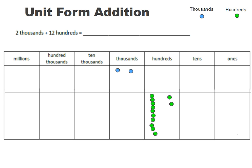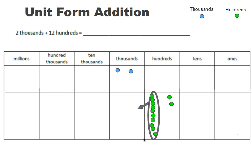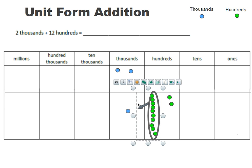When I have ten in this column, what I can do is I can throw a lasso around those and group them together. I can bundle them and change them in for one chip in this column, which would be a thousand chip. So this gets traded in for this chip.